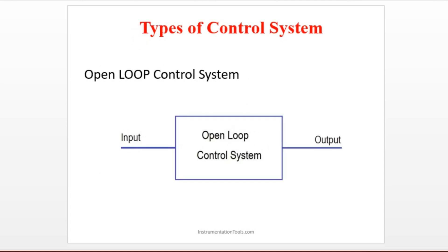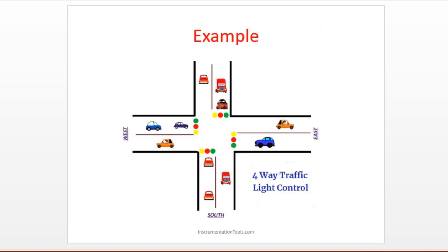As another example, consider a four-way traffic light control. Everyone comes across a traffic junction. It's a simple control system to control traffic, which comes under transport automation. In our previous session we saw the types of automation, and this example falls under transport automation. We will write a simple logic to control this four-way traffic.